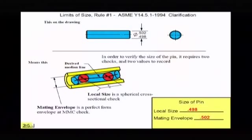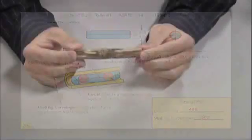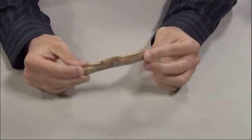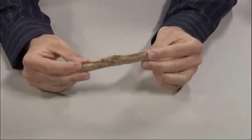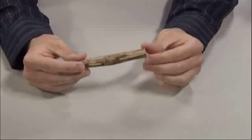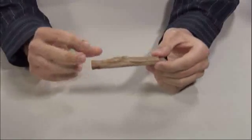Take a look at Scott's model here. This is a piece of dowel rod that we ordered from somebody and we said that we wanted it to be someplace between 498 to 502 and this is what we got. So how are we going to check to make sure this is good? We have to make sure the size is good.